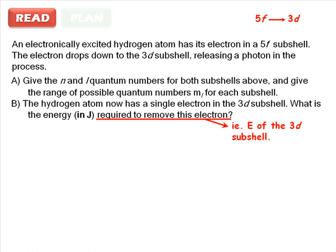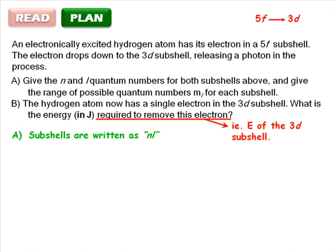Next is the plan stage. Here we summarize the important information needed to solve the problem. For part A, remember that subshells are written in the form N, L, and L is represented by letters. S corresponds to 0, P corresponds to 1, D corresponds to 2, and so on.